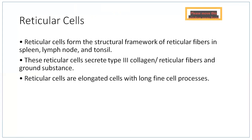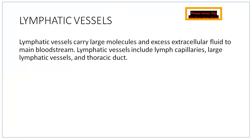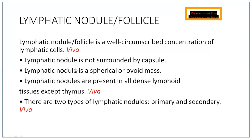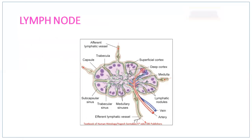Lymph is a fluid seen as interstitial fluid left out by the venous system; lymphatic capillaries collect it. Now let us discuss four important lymphatic organs in detail, which are very important for theory exams and practical histology: lymph node histology, spleen histology, thymus histology, and tonsil histology. We will start with the structure of the lymph node.